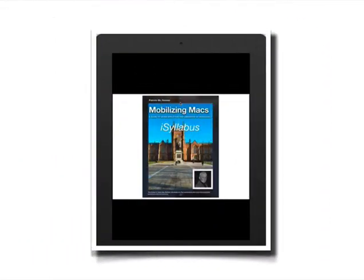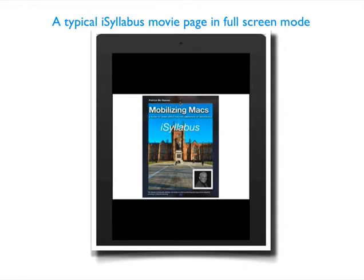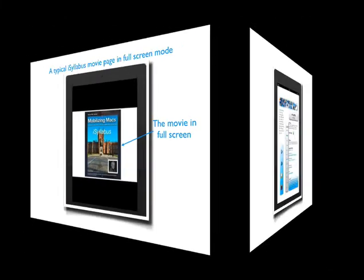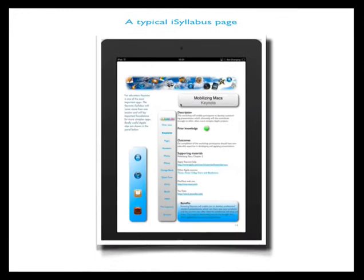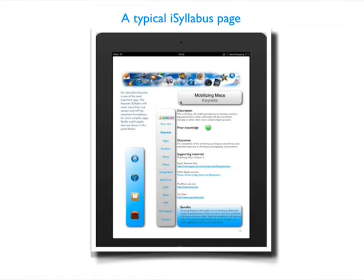Here it is in full screen mode, where we've made the movie enlarge so the reader can view it in full screen. This actually is a more typical page where we have once again the border at the top and the title.